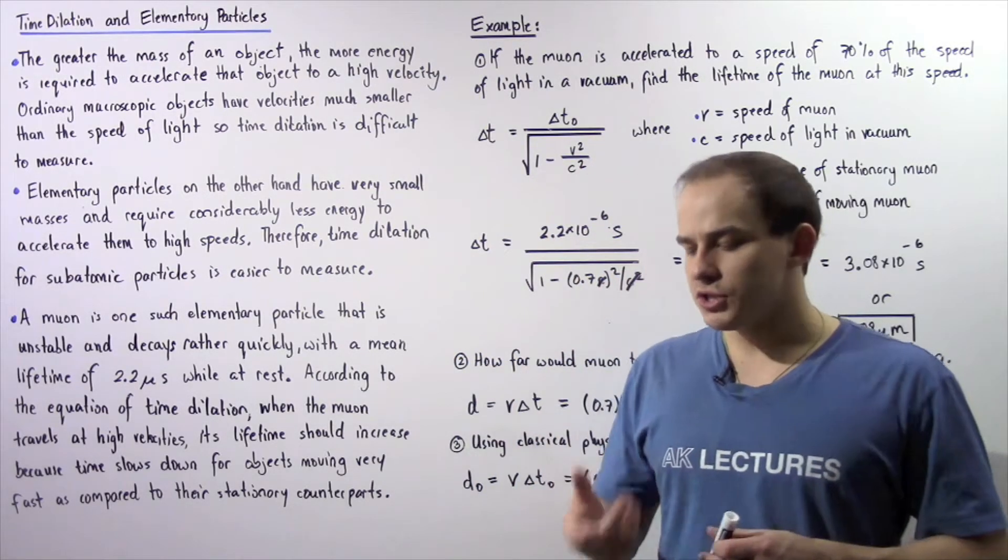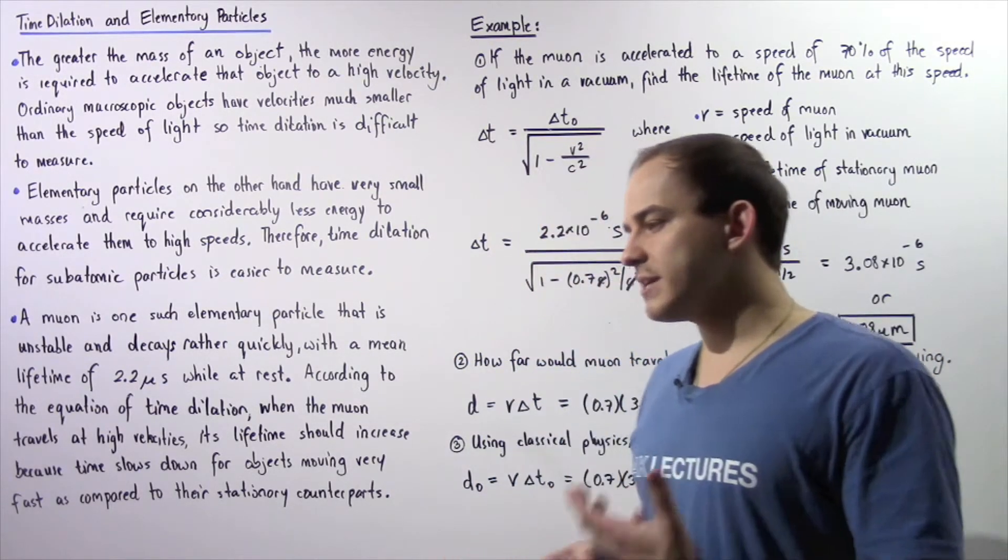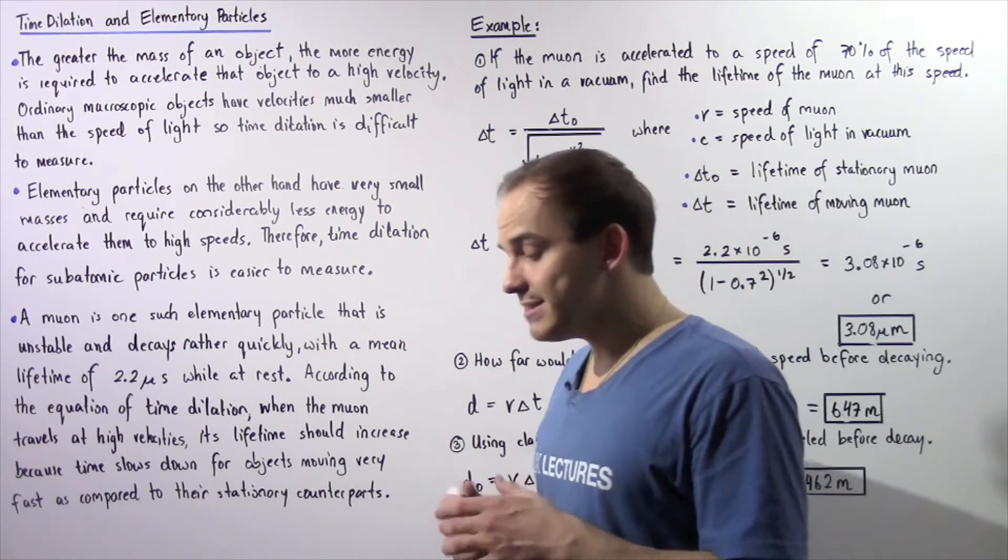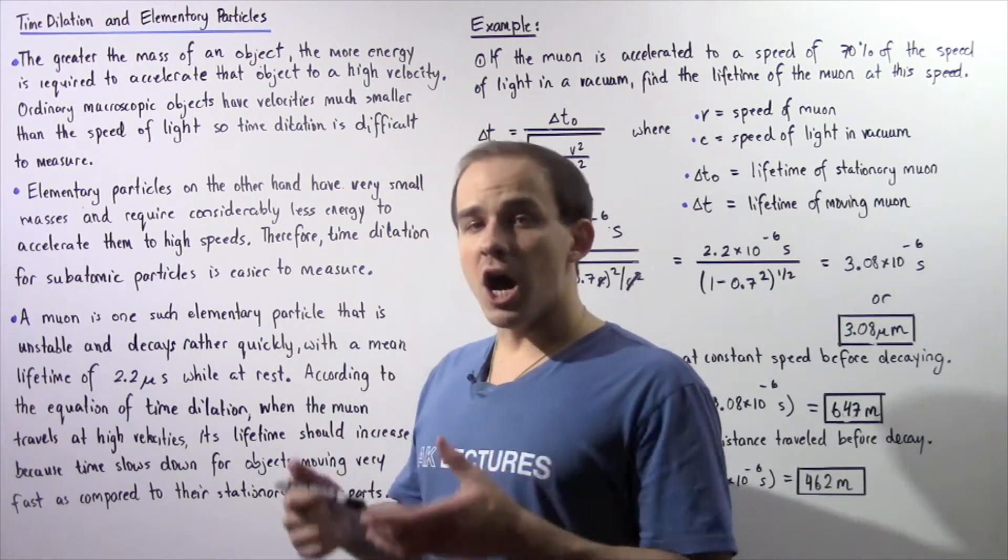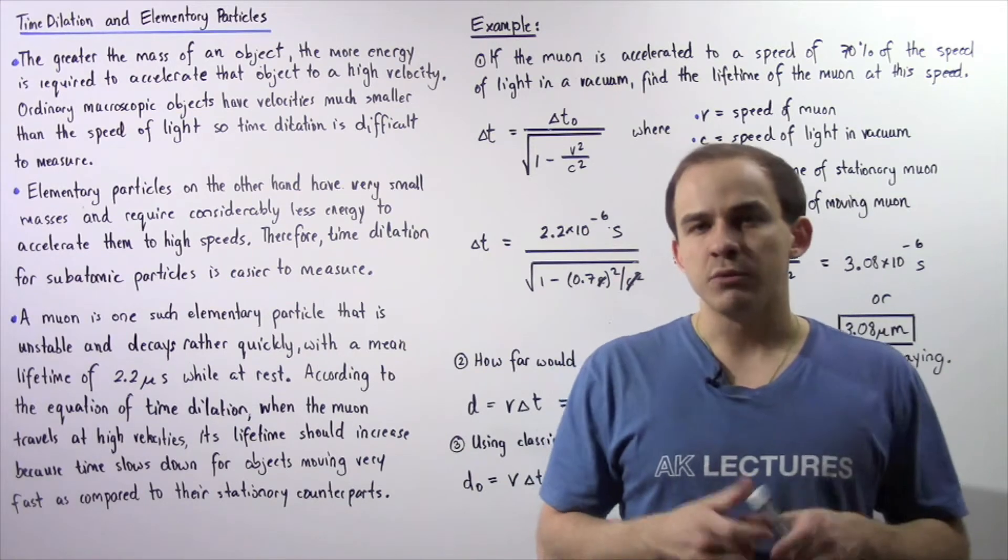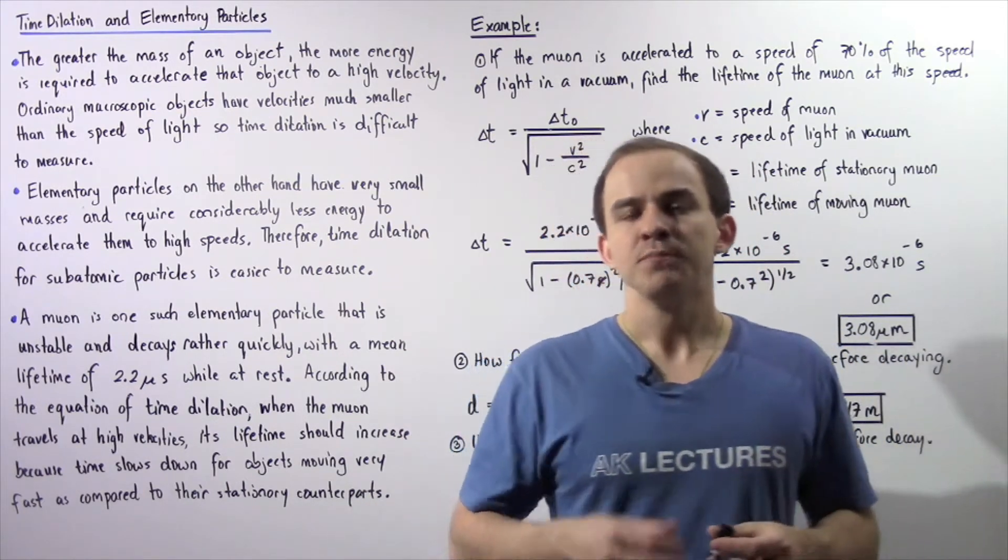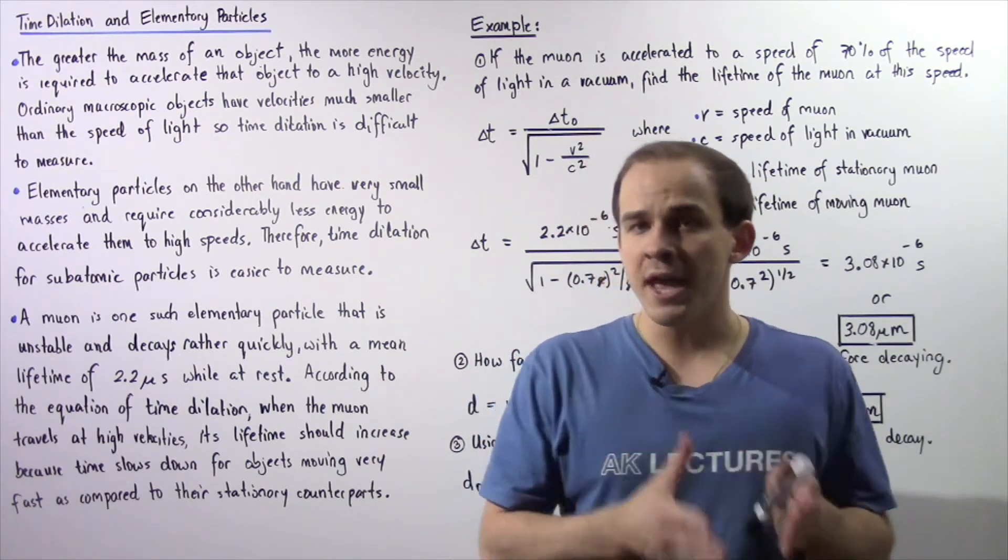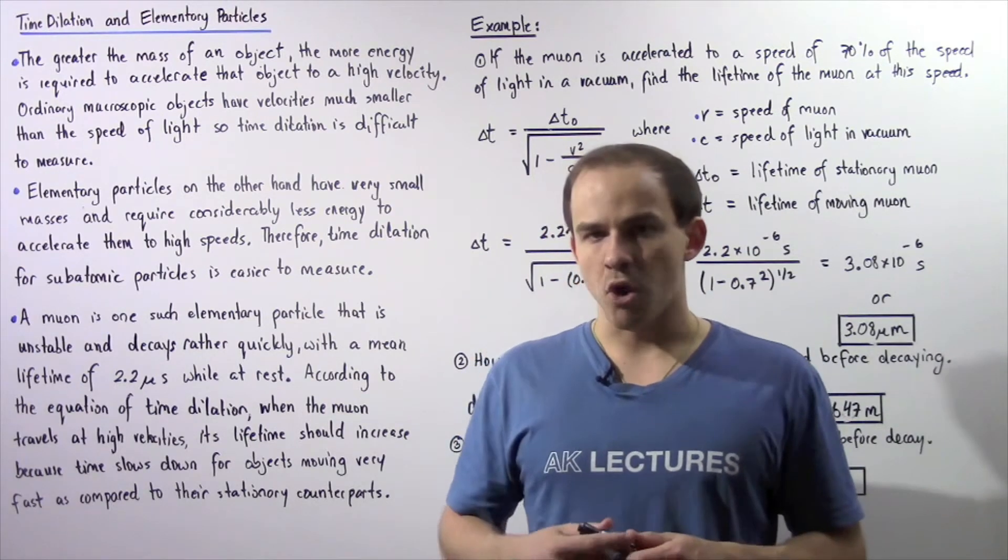Previously, we saw that the special theory of relativity predicts time dilation. So basically, the time for objects that are traveling with very high velocities will slow down compared to their stationary counterparts.